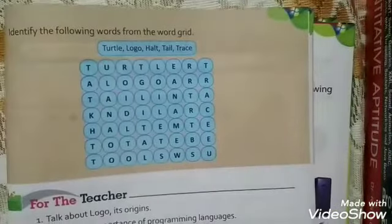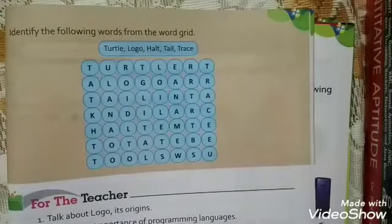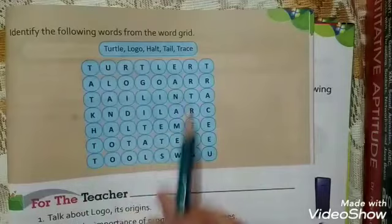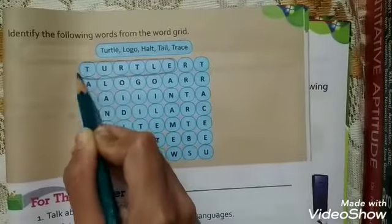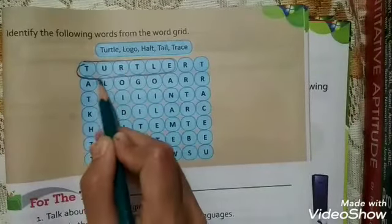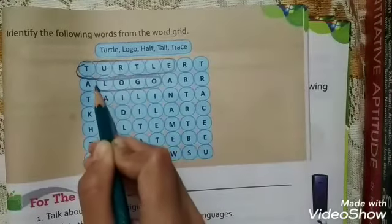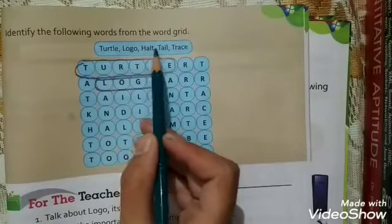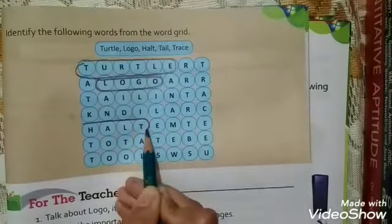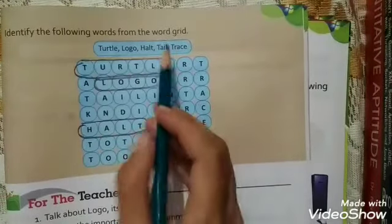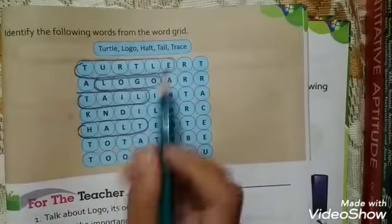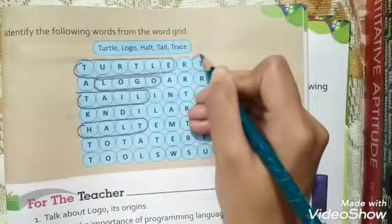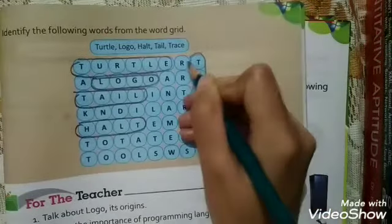Now the next exercise is to identify the following words from the word grid. The first word is TURTLE — T-U-R-T-L-E. Second is LOGO — L-O-G-O. Third is HALT — H-A-L-T. Fourth is TAIL — T-A-I-L. And the last one is TRACE — T-R-A-C-E.